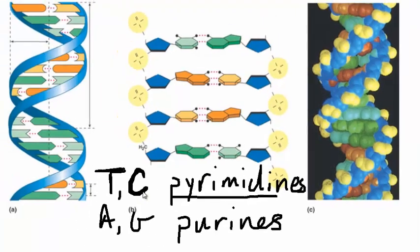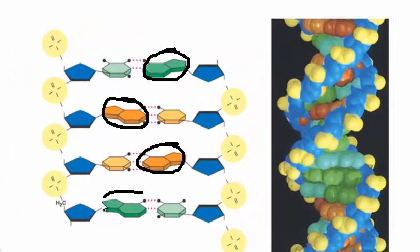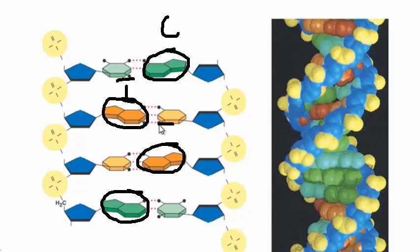In our diagram here, the purines are the bigger bases right here. They take up a little bit more space in the DNA molecule. So we'll just say that this one is our C, and this is our T, this is a T, and this is a C.